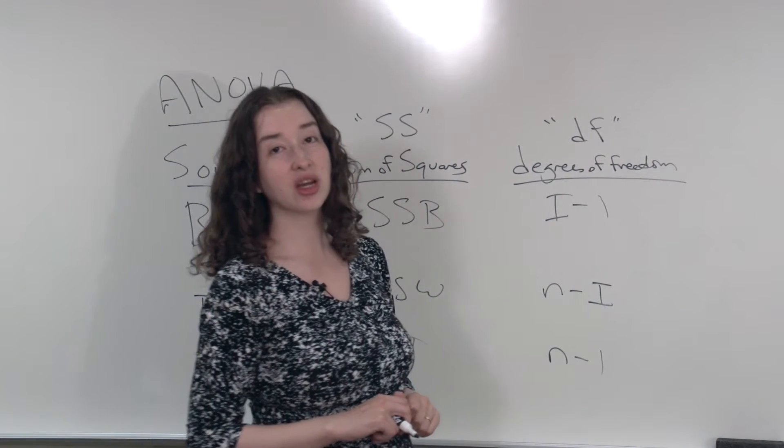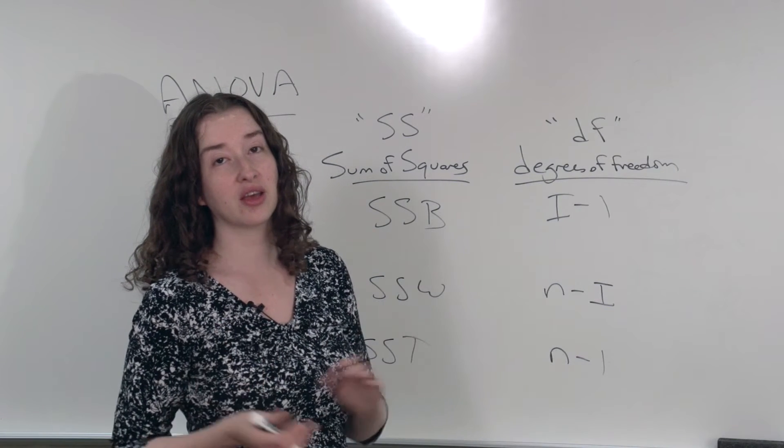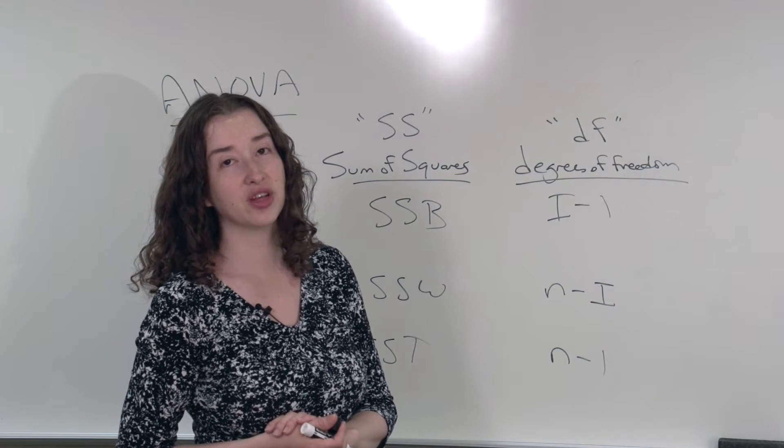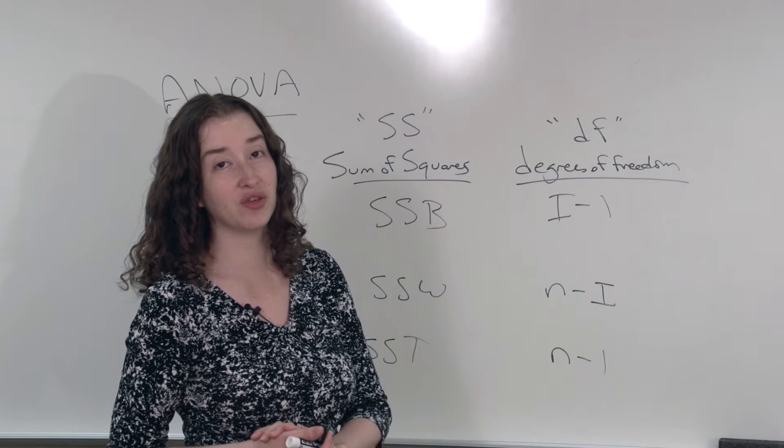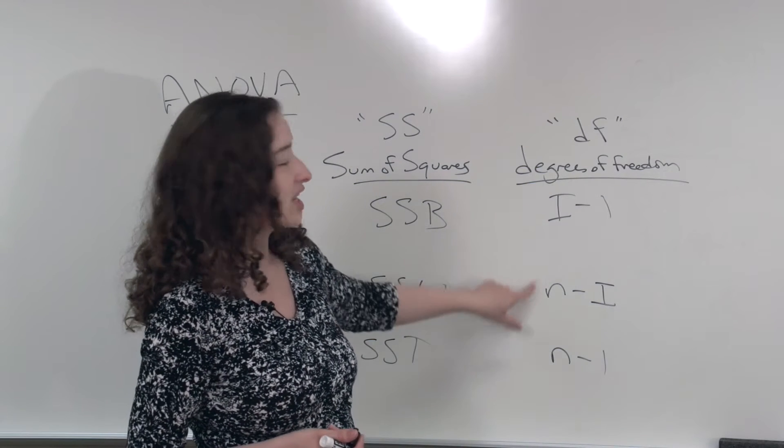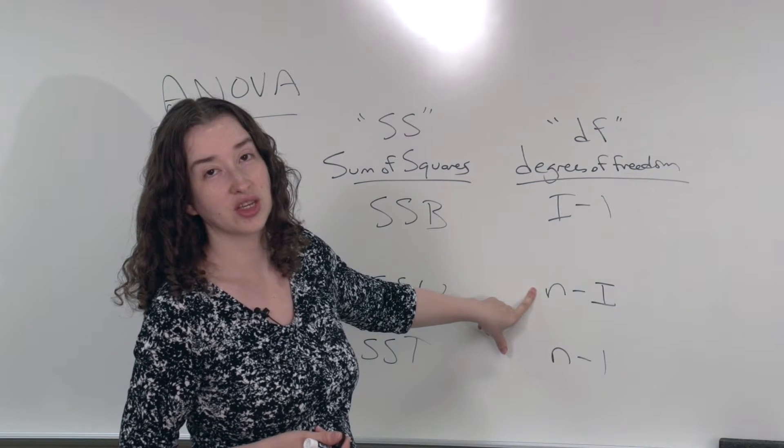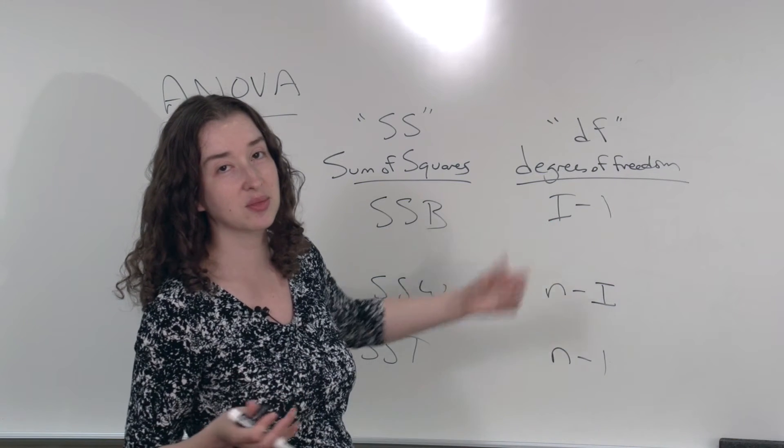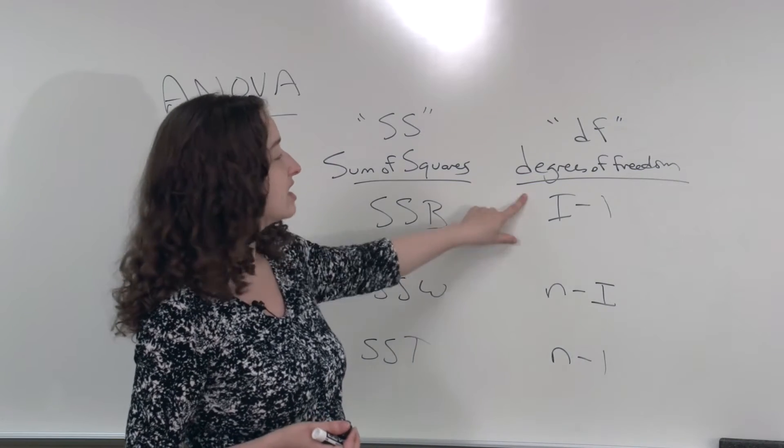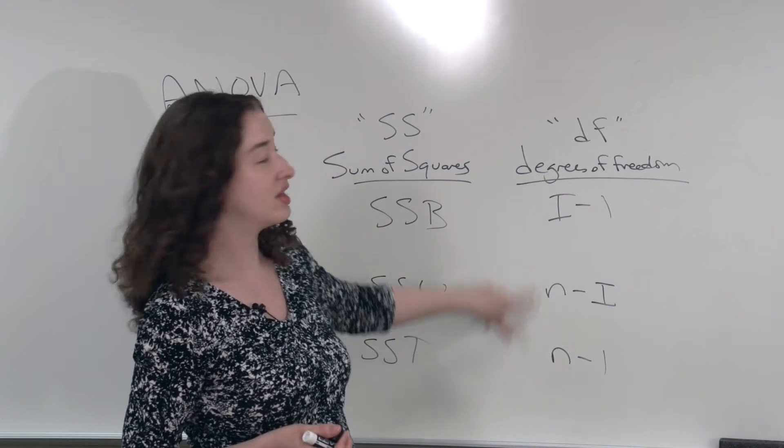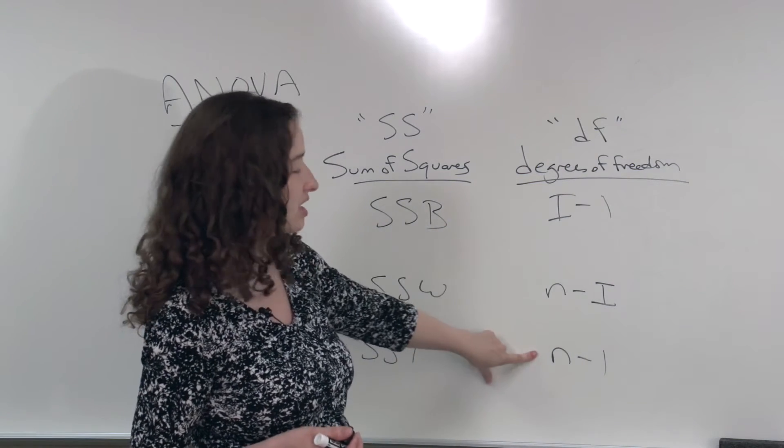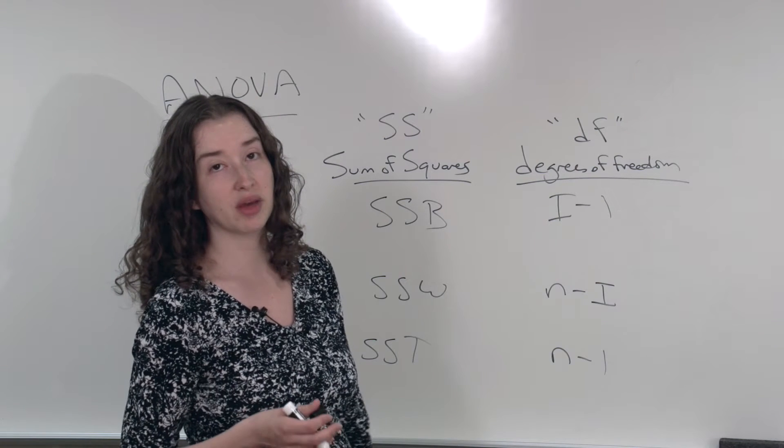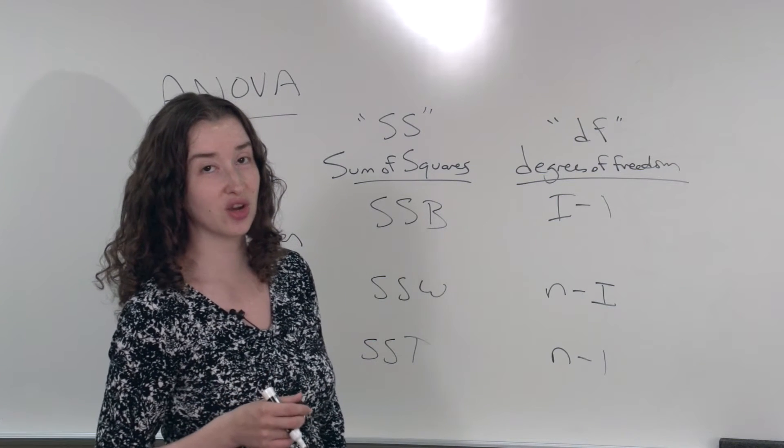And one trick I'll tell you about for looking at your computer output and trying to figure out whether you specified your ANOVA correctly, you should check these numbers and see whether they look like what you think they should be. The easiest sign to recognize of making some kind of error in specifying your ANOVA is that these degrees of freedom are not what you think. This is not number of groups minus 1. This is not total number of observations minus 1. So check those numbers as soon as you see your ANOVA output.